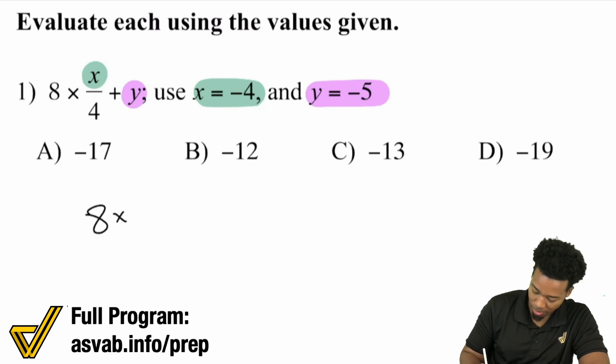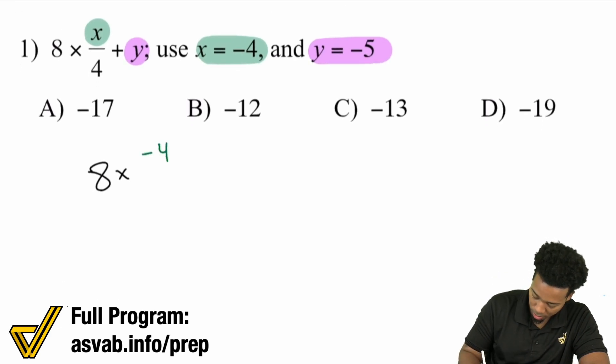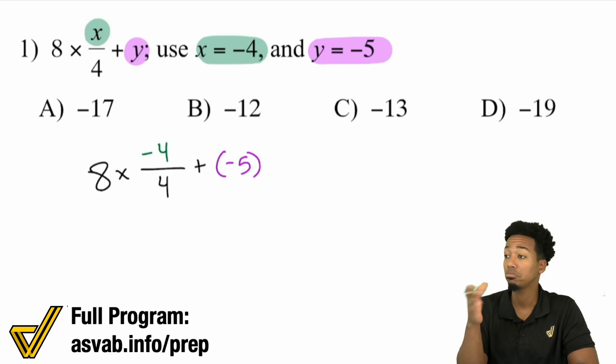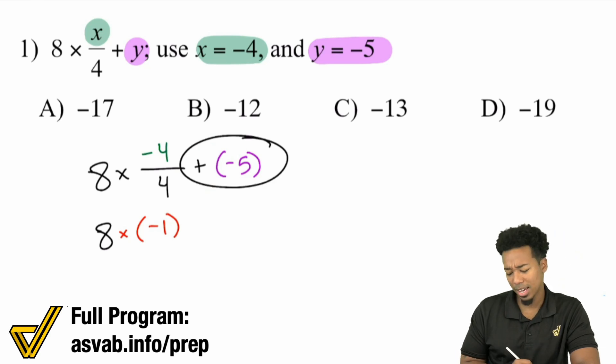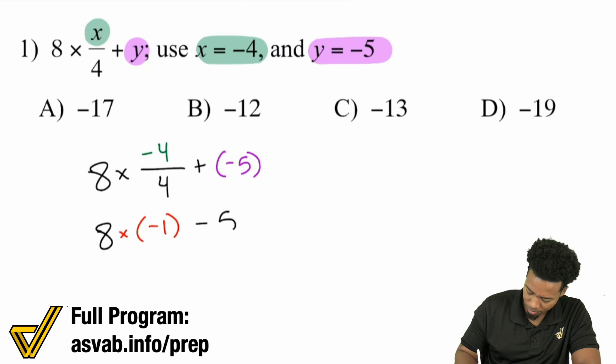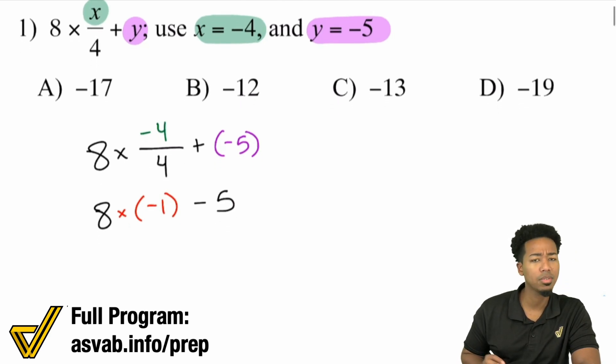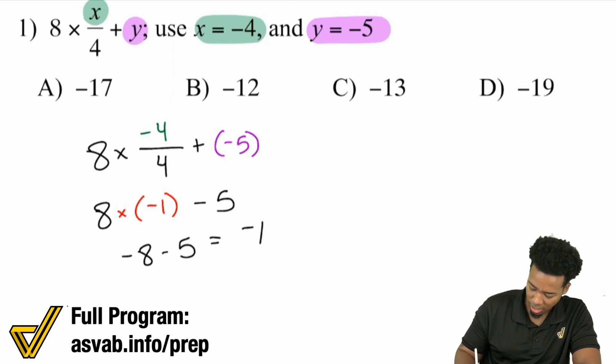Once you make sure you do that, then it's order of operations and you're done. We have 8 multiplied by negative 4 over 4 plus, and then y will be negative 5. Your only concern now is order of operations. We have negative 4 over 4, that's negative 1. So we have 8 multiplied by negative 1, and then we're adding negative 5, which is the same as subtracting, so minus 5. Eight times negative 1 is negative 8. Negative 8 minus 5 is negative 13. The answer here is C.